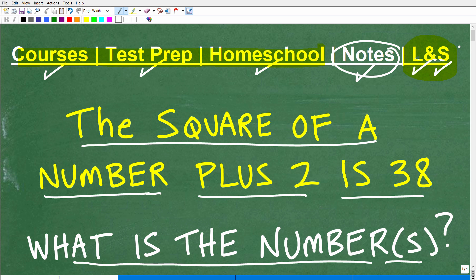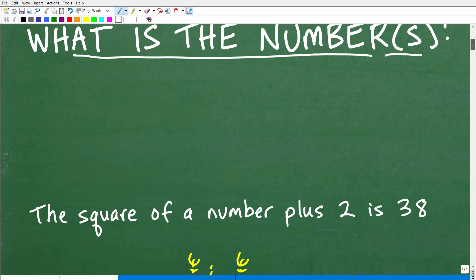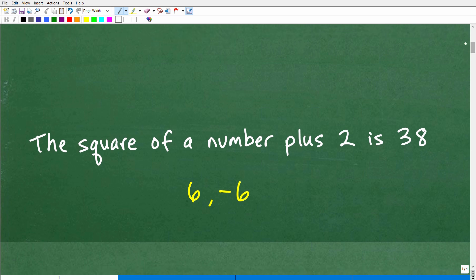Okay, so let's go ahead and show you the correct answer, and then we're going to get into the actual solution. Here it is. The square of a number plus 2 is 38. What is the number? The numbers are actually 6 and negative 6.